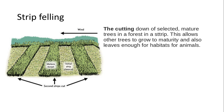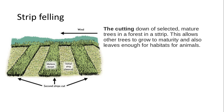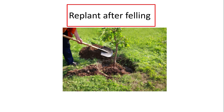Strip felling is where you cut down selected mature trees in the form of a strip. This allows other trees to grow to maturity and also leaves enough habitat for other animals. Importantly, after you have felled a tree, if appropriate you would need to replant — a very good sustainable way of producing timber.